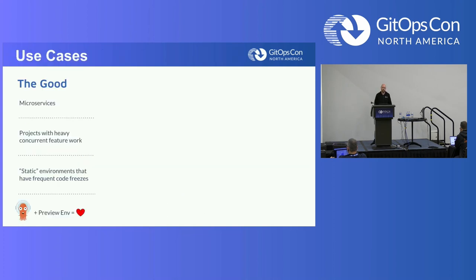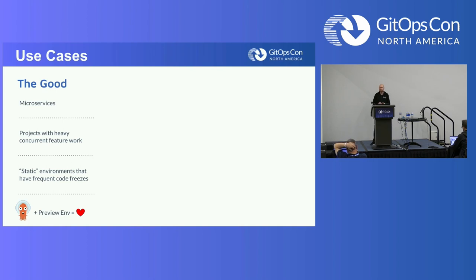Let's talk about some use cases. Starting with the good — the first one being microservices. Most people in Kubernetes are doing some sort of microservices or mini services. They're just a naturally good fit for this — they're bite-sized and you can easily test them in a preview environment. Ideally, if you really followed microservices best practices, you don't have a lot of other dependencies that are going to cause problems.